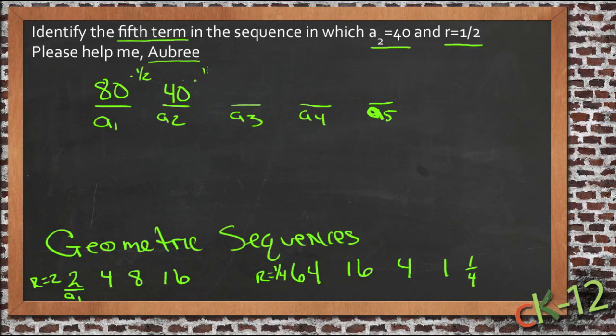40 times 1/2 would give us our third term, that's 20. 20 times 1/2 would give us our fourth term, 10. And then 10 times 1/2 would give us our fifth term, 5. So the fifth term in this sequence is 5.